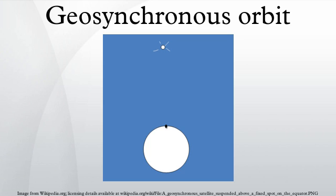Synchronous orbits can only exist for bodies that have a fixed surface. Without such a surface there is no fixed point an orbit can be said to synchronize with. No synchronous orbit will exist if the body rotates so slowly that the orbit would be outside its hill sphere, or so quickly that it would be inside the body. Large bodies held together by gravity cannot rotate that quickly since they would fly apart, so the last condition only applies to small bodies held together by other forces, for example smaller asteroids.